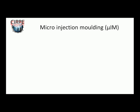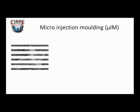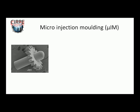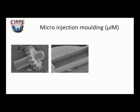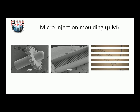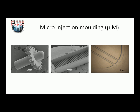Polymer micro-products include, for example, micro-mechanical systems, functional micro-components for medical applications, and micro-fluidic systems with micro-channels. The production of such small parts with weight in the milligram range and micro-features in the order of micrometers has highly challenged the injection molding process itself.